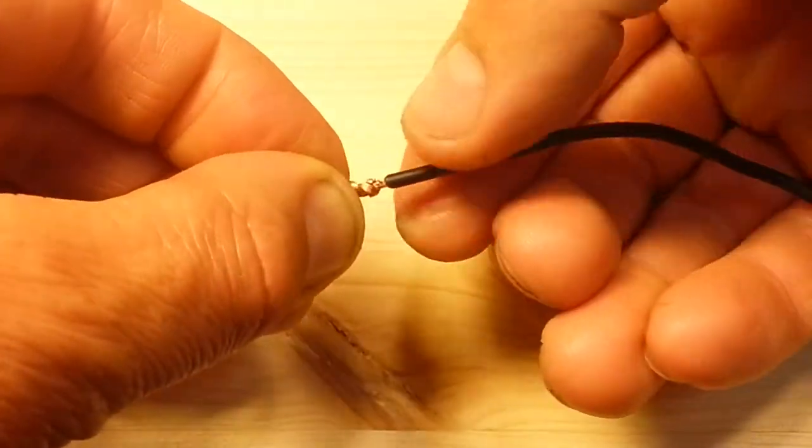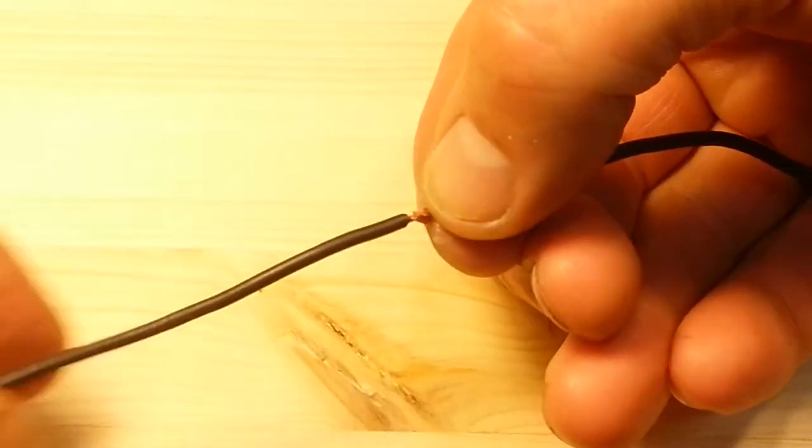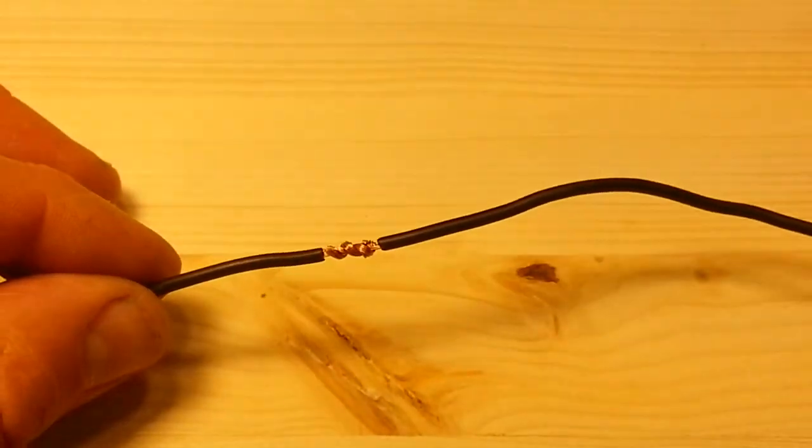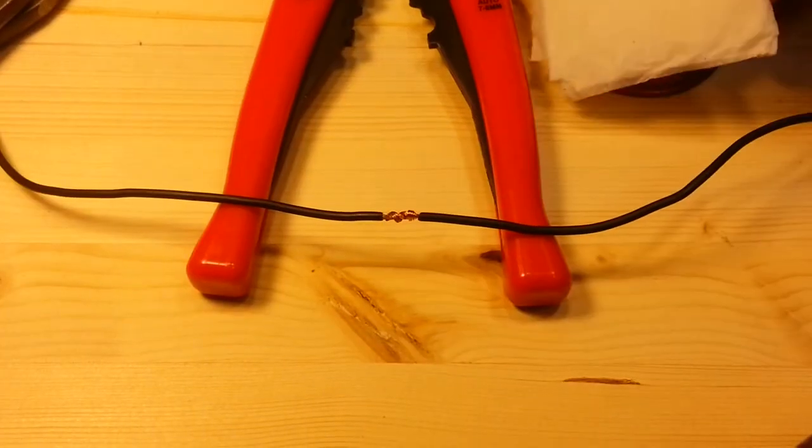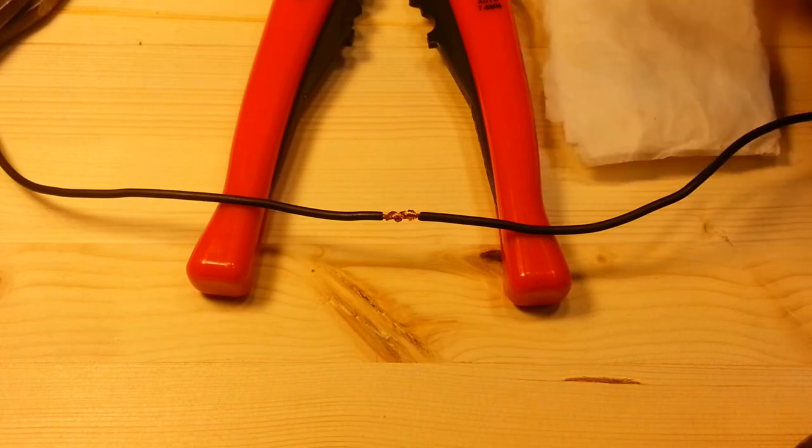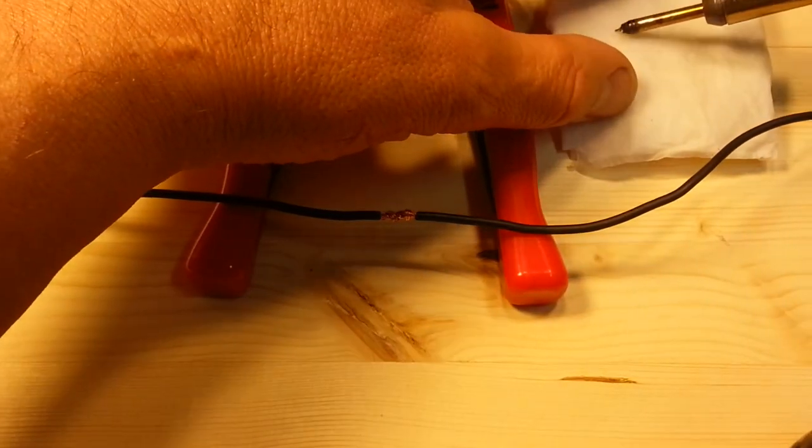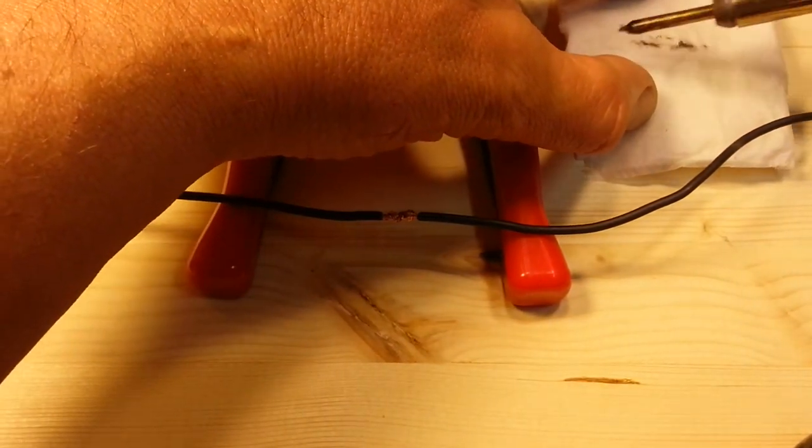Once I'm satisfied the connection looks clean and tightly wound, I'll grab that moist square of paper towel and put it beside me on the bench. I will then take my hot soldering iron and wipe the wet paper towel with it. This I do to remove any corrosion and contaminants that likely will be on the tip of the iron.